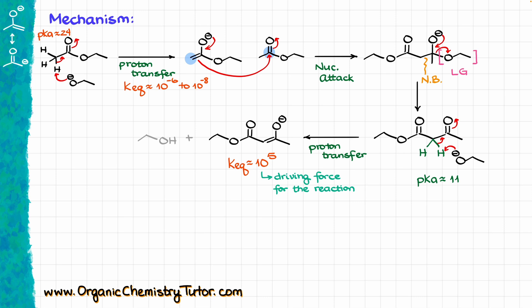Because that proton transfer is so favorable, that last step is going to be the entire driving force for our reaction. Remember, whenever you are doing your Claisen condensation, you must have an intermediate that can be enolized. If you cannot enolize the product of your nucleophilic attack, that is not going to be your final product. The molecule is going to decompose and go back to starting materials, because every step is in equilibrium, and every step until the very last proton transfer is unfavorable. The entire reason this reaction goes in the direction we want is that last proton transfer — no proton transfer, no reaction.